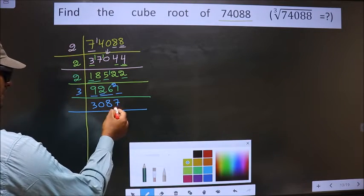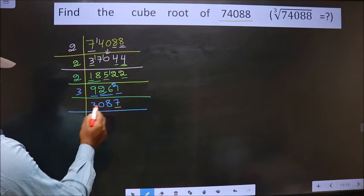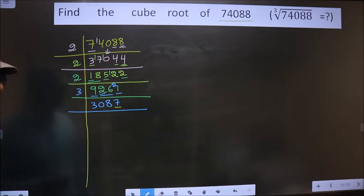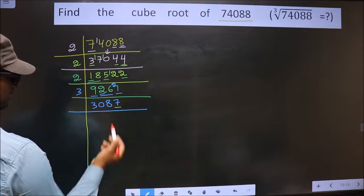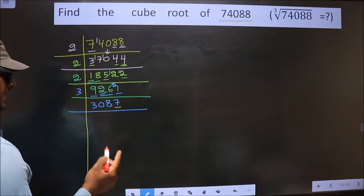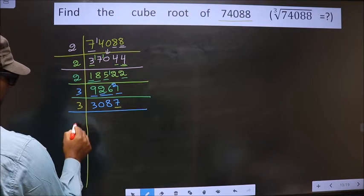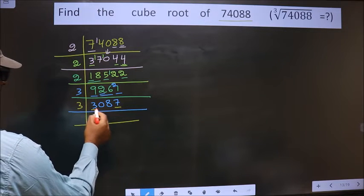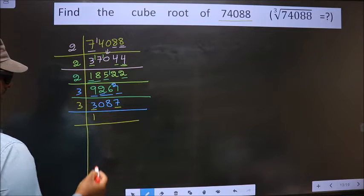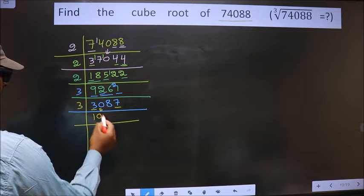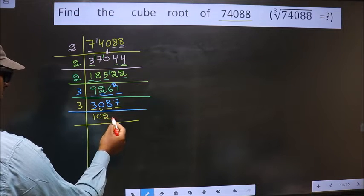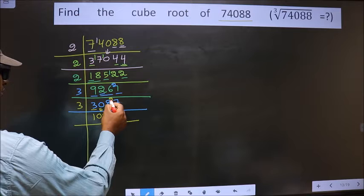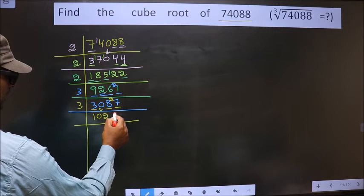The last digit is 7, which is not even, so not divisible by 2. Next prime number is 3. Adding the digits: 3+0+8+7=18. Is 18 divisible by 3? Yes, so this number is also divisible by 3. We take 3 here. The first number is 3; 3×1=3. Bring 0 down. Next is 8; closest in the 3-times table is 3×2=6. 8 minus 6 is 2, carried forward making it 27. 3×9=27.